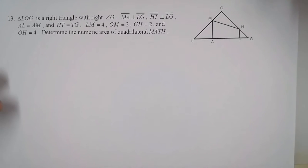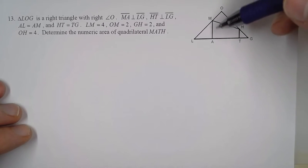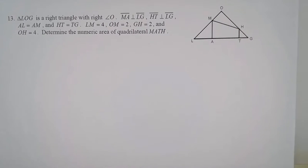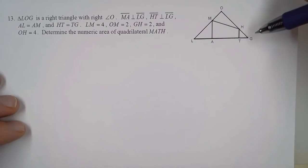In this problem, triangle L-O-G is a right triangle with right angle O. M-A is perpendicular to L-G, and H-T is perpendicular to L-G. They give us that A-L and A-M are equal, H-T and T-G are equal.